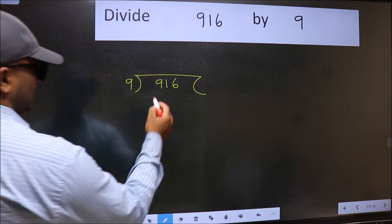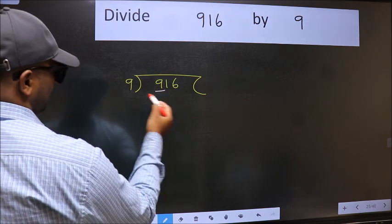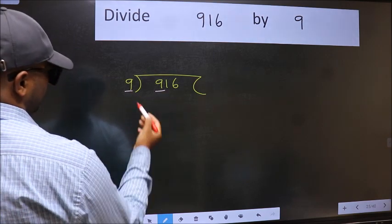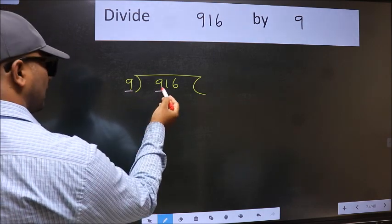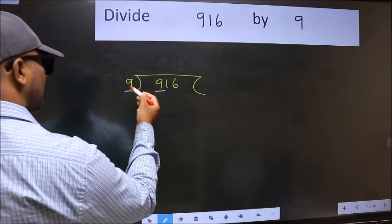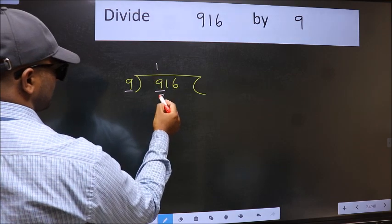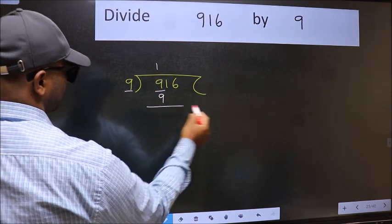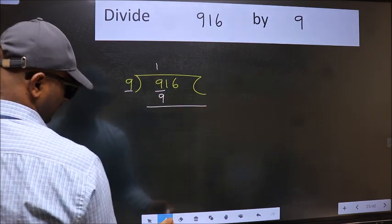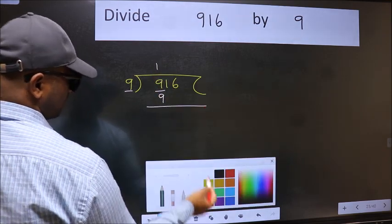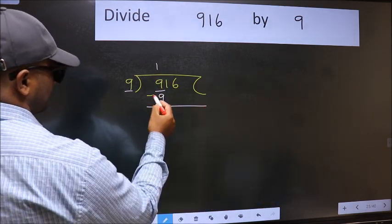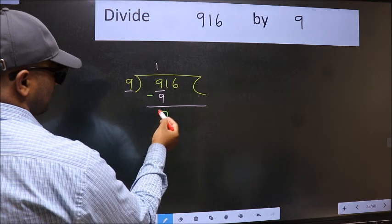Here we have 9 and here 9. When do we get 9 in the 9 table? 9 ones are 9. Now we should subtract. We get 0.